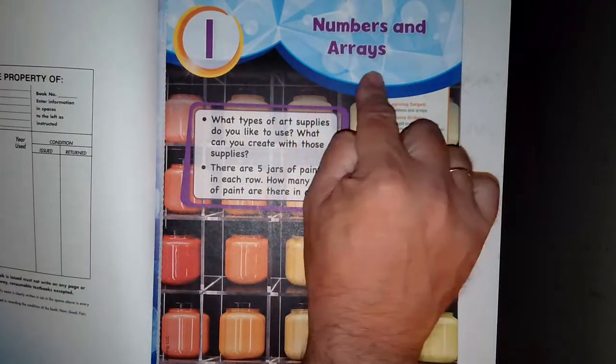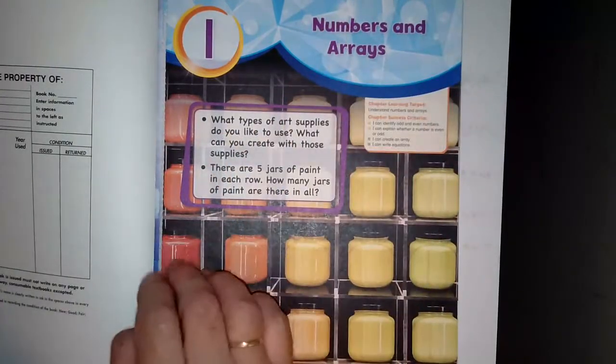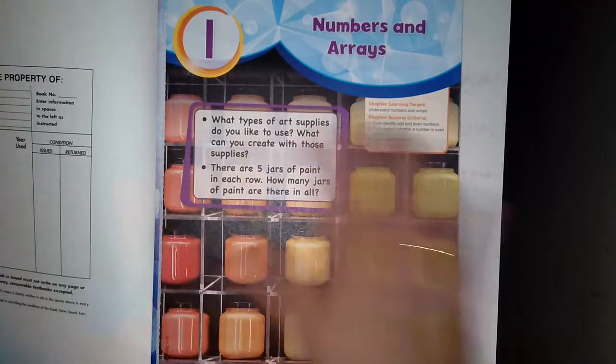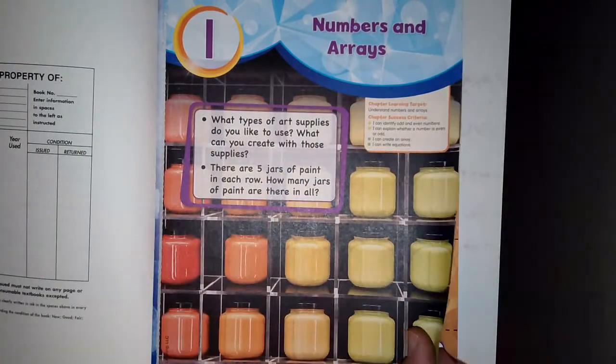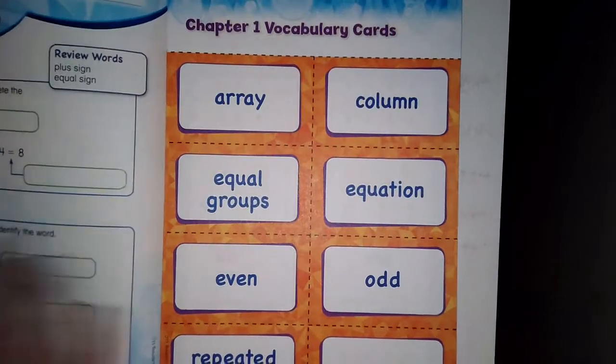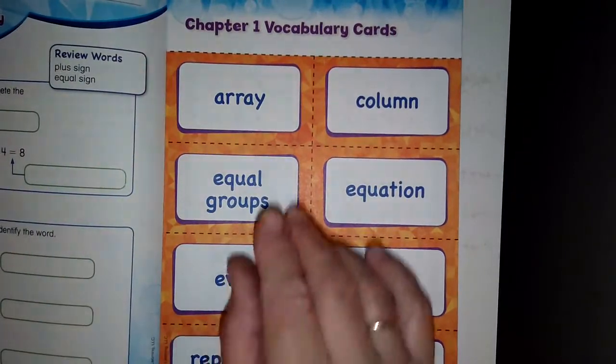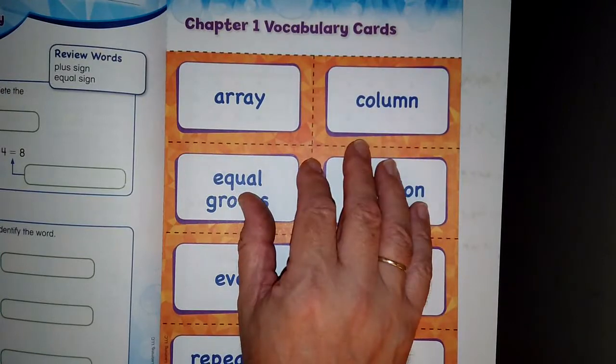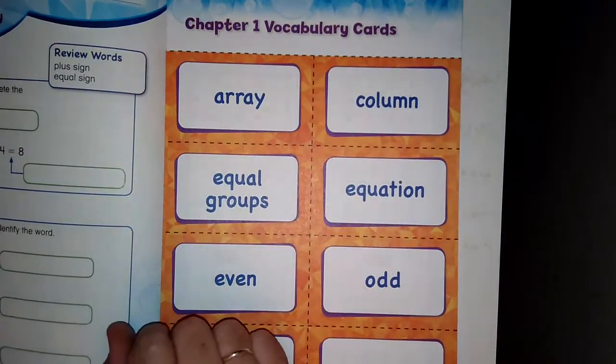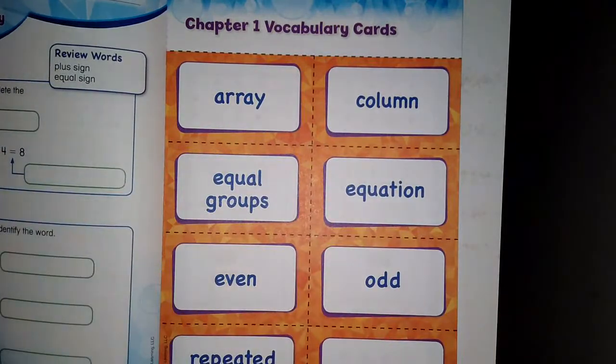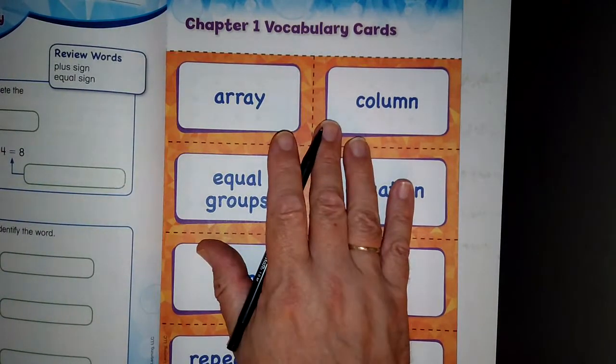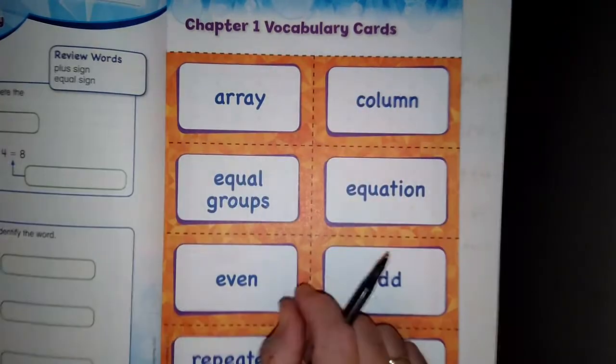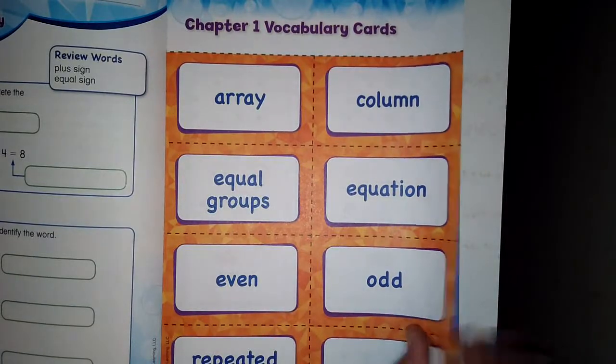This is going to be the page where I want to start at page number one. It's all about numbers and arrays. We have already worked on numbers and arrays all year long. Now, follow along, and if I'm going too fast, you can pause and continue watching later after you catch up. Just get a pencil and start writing in the things that I write.